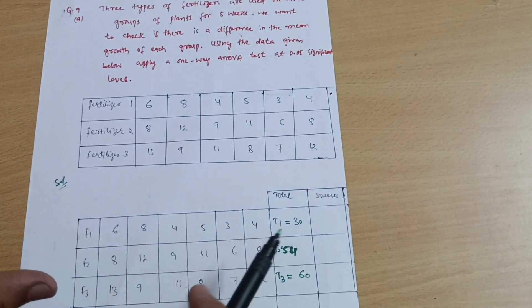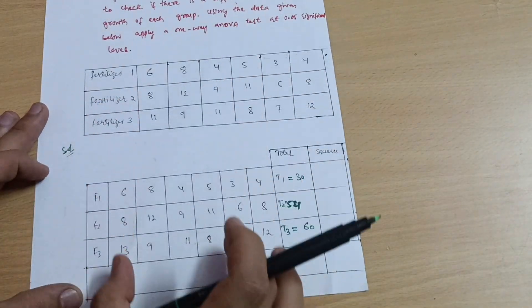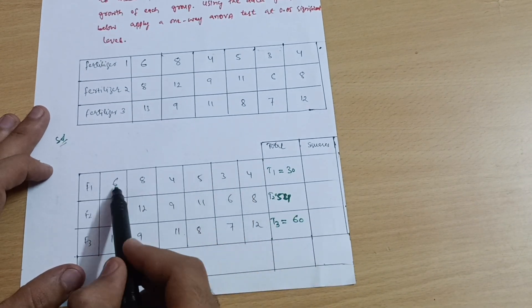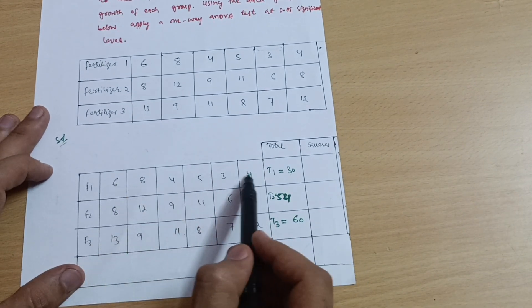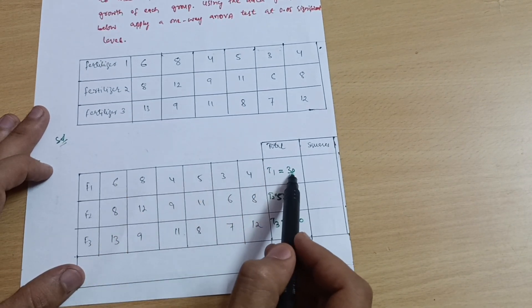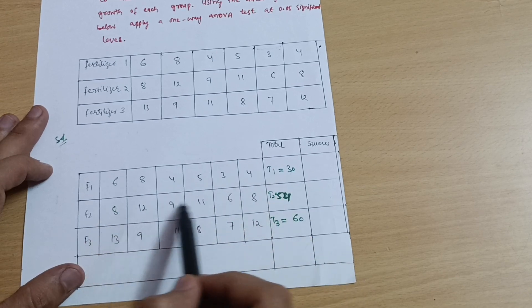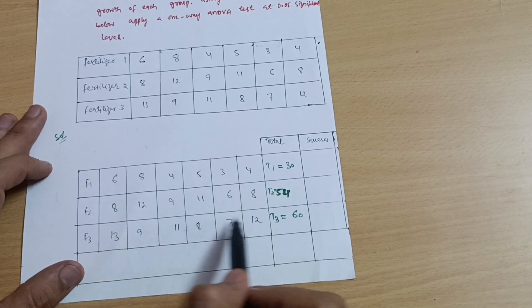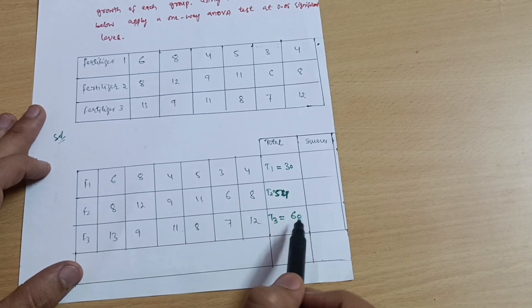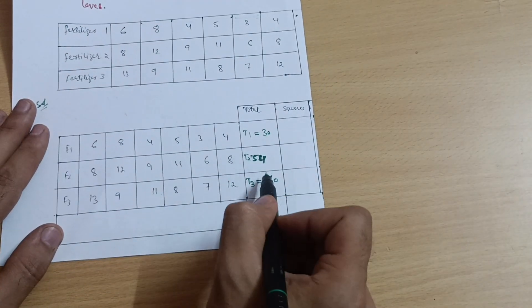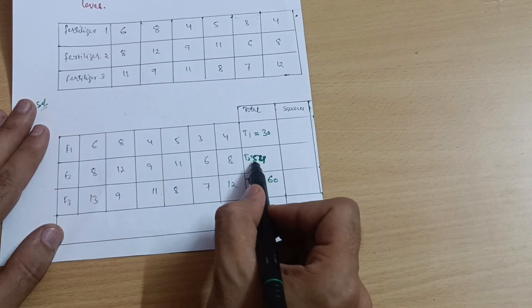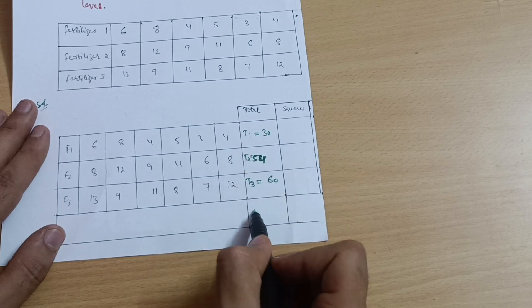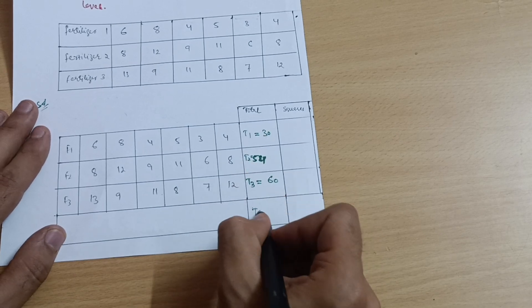While writing the solution you should draw three tables. First, draw the data table as given, then calculate totals. Sum the first column to get T1 = 30, sum the second column to get T2 = 54, sum the third column to get T3 = 60. Then calculate the grand total T: 60 + 50 = 110, 114 + 30 = 144. So T = 144.